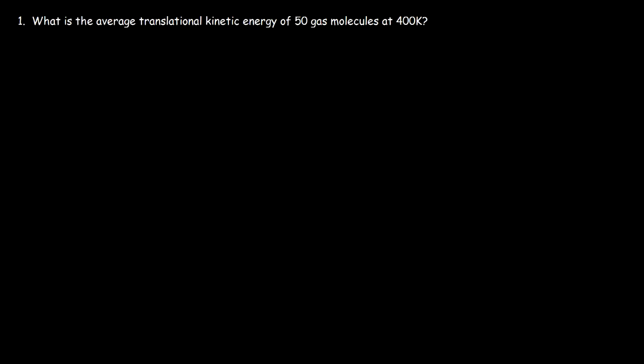How can we calculate the average translational kinetic energy of 50 gas molecules at 400 Kelvin? Let's start with this formula. The average kinetic energy is going to be 3 over 2 kT, where k is Boltzmann's constant. This equation gives you the kinetic energy in joules per molecule.